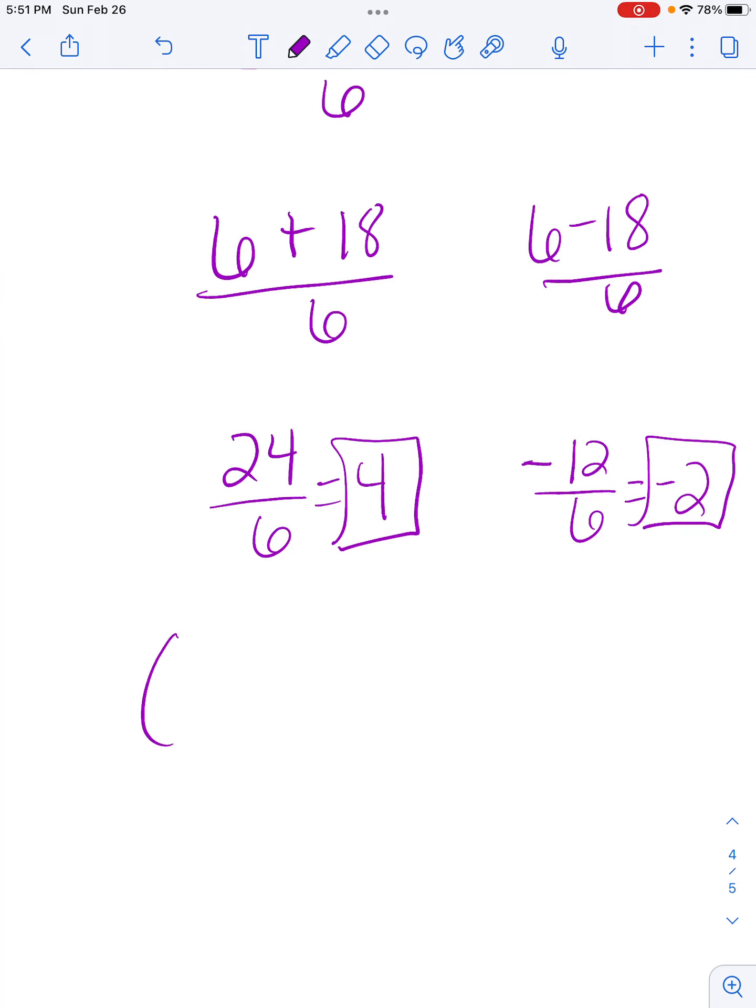So my x-intercepts are 4 comma 0 and negative 2 comma 0. And how I know for the x-intercepts where the 0 goes: the x-intercept is always the number comma 0.